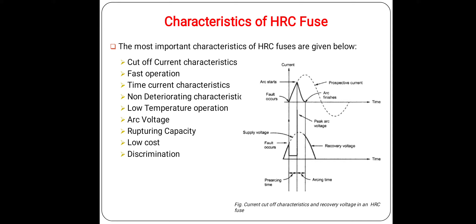Due to its inverse time-current characteristics, the fuse operates quickly when the fault is large, reducing operating time. The next characteristic is non-deteriorating characteristics: since HRC fuses are called upon to function only occasionally, preservation of their characteristics throughout their useful life is essential. They should not operate when carrying normal load currents, as happens in rewireable fuses due to oxidation and reduction of cross-sectional area. This property is achieved by hermetic sealing of the silver element with special cementing and soldering of end caps.